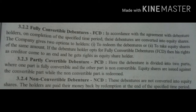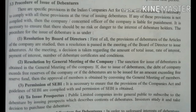Procedure of issue of debenture: there are specific provisions in the Indian Companies Act for the issue of a debenture. It is necessary to mention all the provisions at the time of issuing the debenture; if something goes wrong, the concerned officer will be liable for punishment. First is resolution by board of directors: the provisions of the articles of the company are studied, then a resolution is passed in the meeting of the board of directors to issue the debenture. At this meeting, decisions are taken about the total issue, rate of interest, payment of interest, number of debenture certificates, and conditions.